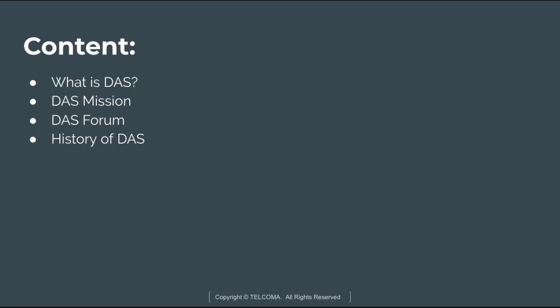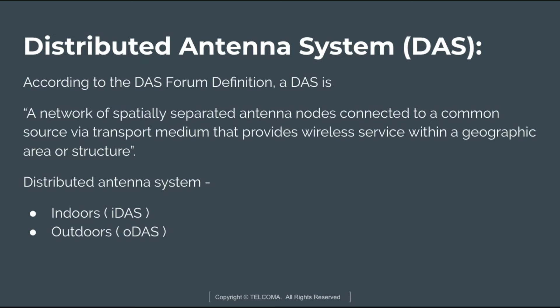According to the Distributed Antenna System Forum, a distributed antenna system is a network of spatially separated antenna nodes that are connected to a common source with the help of a transport medium, and it provides wireless service within a geographical area or a structure. There are two types: the indoor distributed antenna system, designed inside a building, and the outdoor distributed antenna system, designed outdoors.